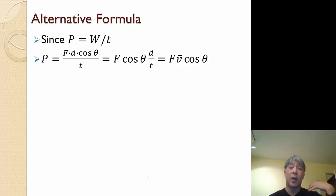Alternative formulas. Since P = W/t, we can make a substitution for work. Remember work is equal to force times distance times the cosine of theta, where theta is the angle between force and displacement.